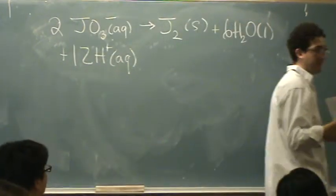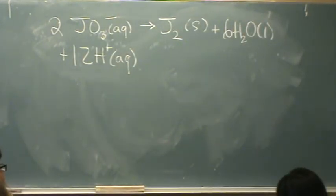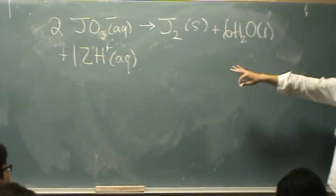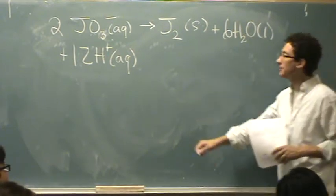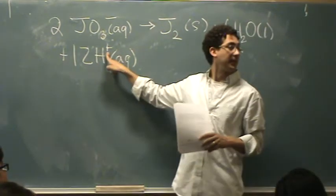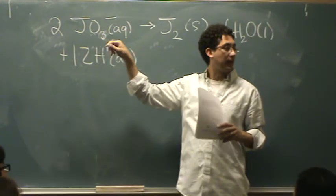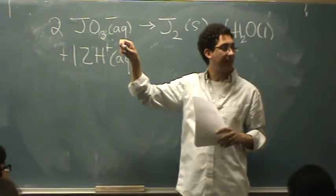And now, the step you're really interested in: what is the overall charge on the right hand side? Zero. On the left hand side? Ten plus. So 12 plus here and two minus here. The total is—I forgot what I just said—ten, I think. Yeah.